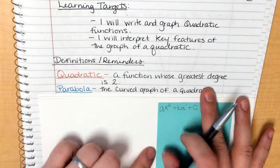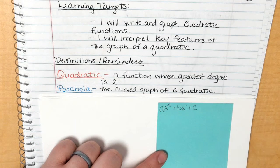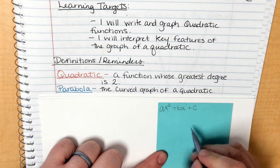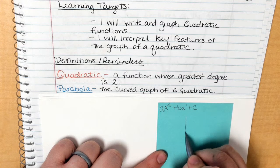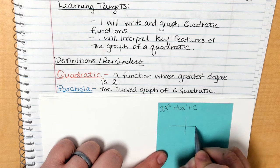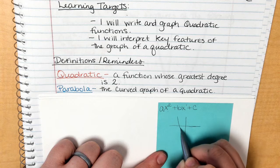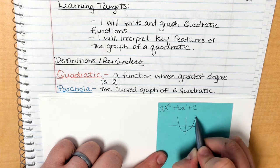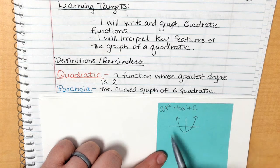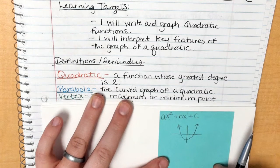The second definition is a parabola. A parabola is the curved graph of a quadratic. So this is a quadratic function, and its graph looks like a U-shaped curve. That curve is a parabola.